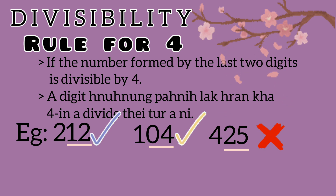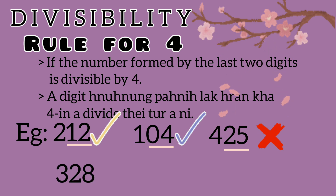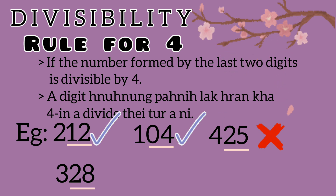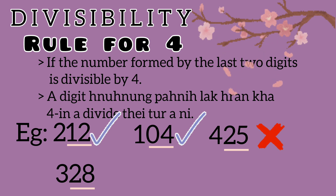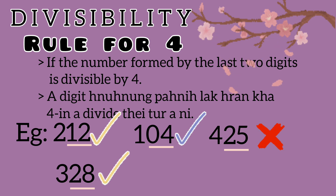Example: 328. The last 2 digits are 2 and 8 — that is 28. Is 28 divisible by 4? 4 times 7 equals 28. Yes! So 328 is divisible by 4.